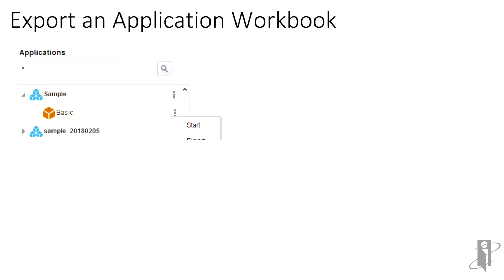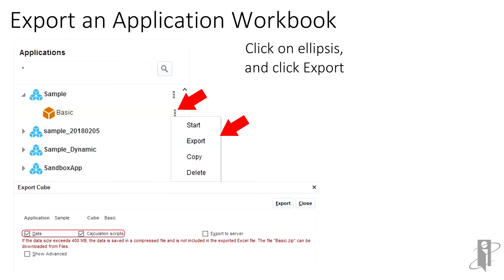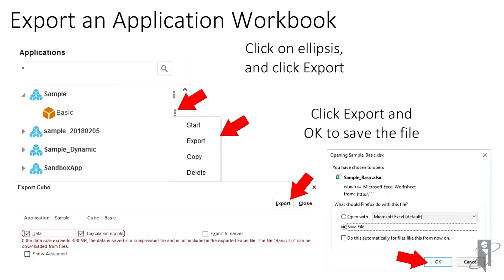To export a cube in application workbook format via the OAC ESpace web interface, first log in to your OAC ESpace instance. On the home page in the applications listing, click on the ellipsis next to the cube you want to export and click Export. Check the boxes if you want to include data and calculation scripts, then click Export and OK to save.